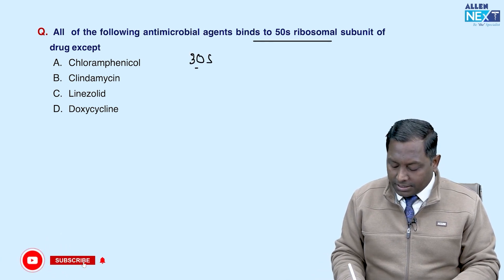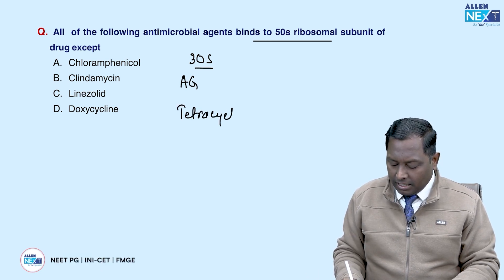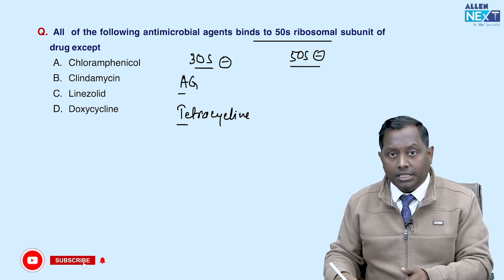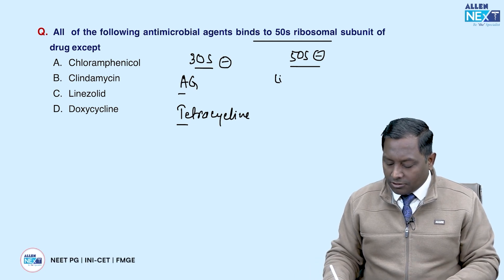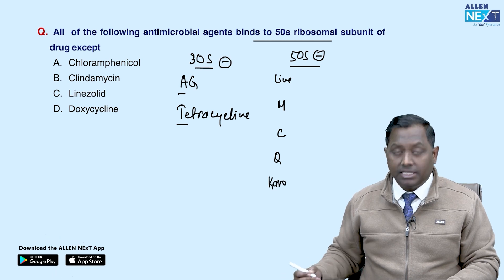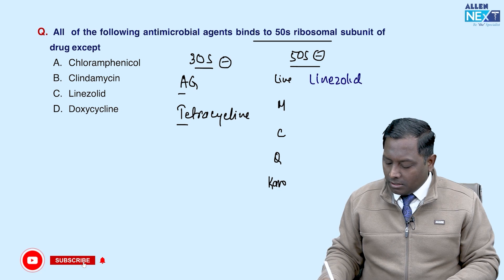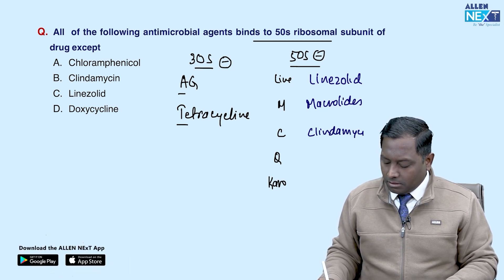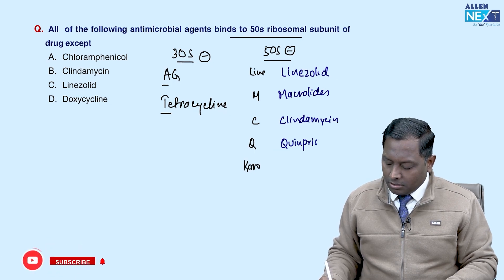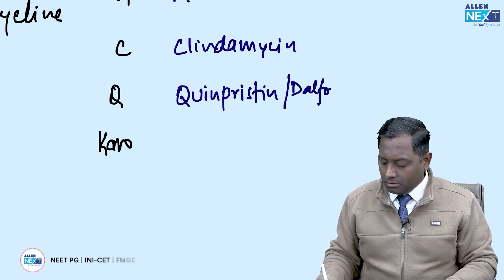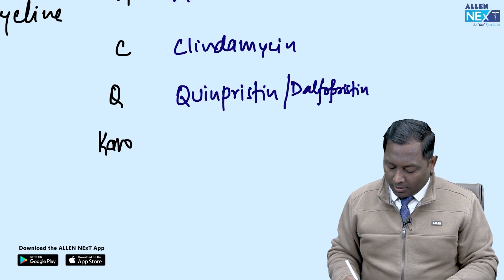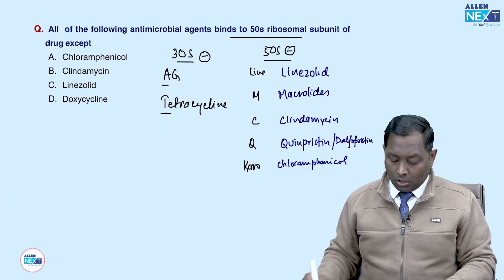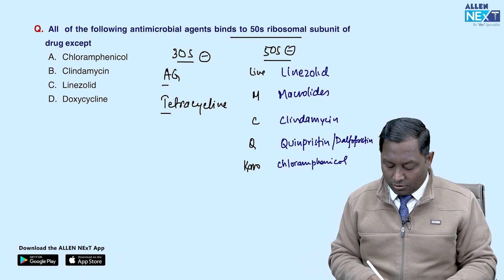Which antimicrobial agents bind to the 50S ribosomal subunit? Aminoglycosides and tetracyclines bind to 30S. For 50S binders, use the mnemonic 'LINE se MCQ karo': Linezolid, macrolides (erythromycin, azithromycin, clarithromycin), clindamycin, quinupristin-dalfopristin, and chloramphenicol. Doxycycline is a tetracycline — it binds 30S, not 50S. So doxycycline is the exception.